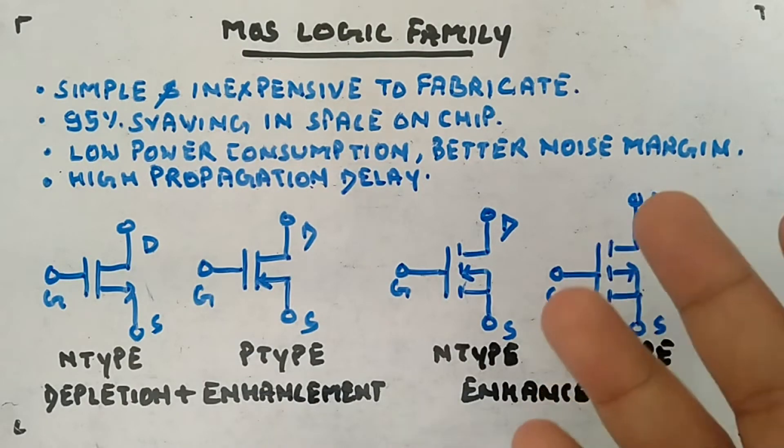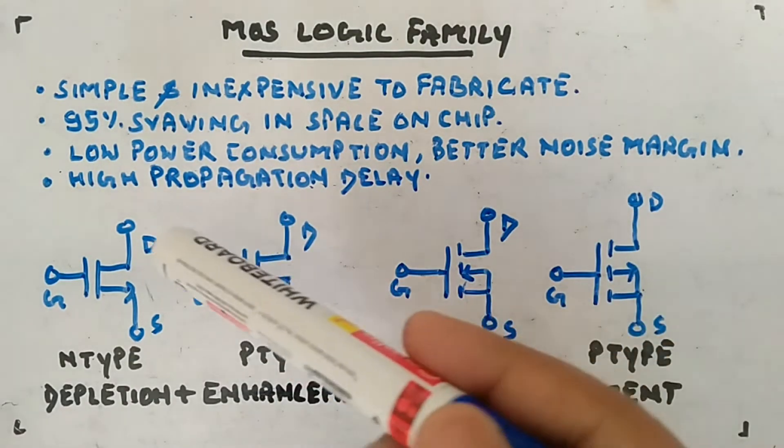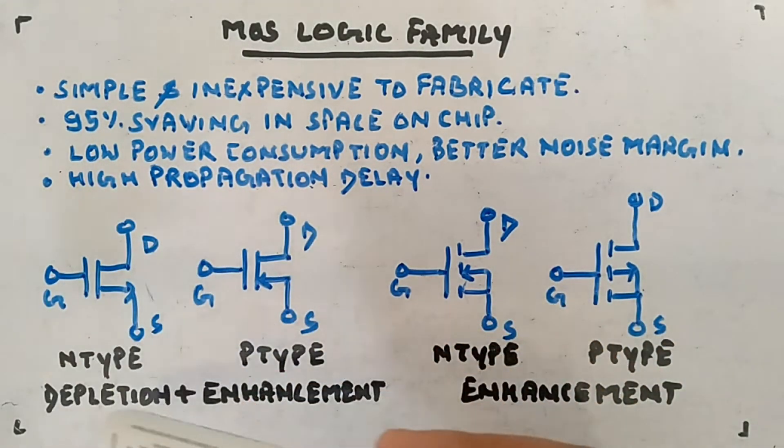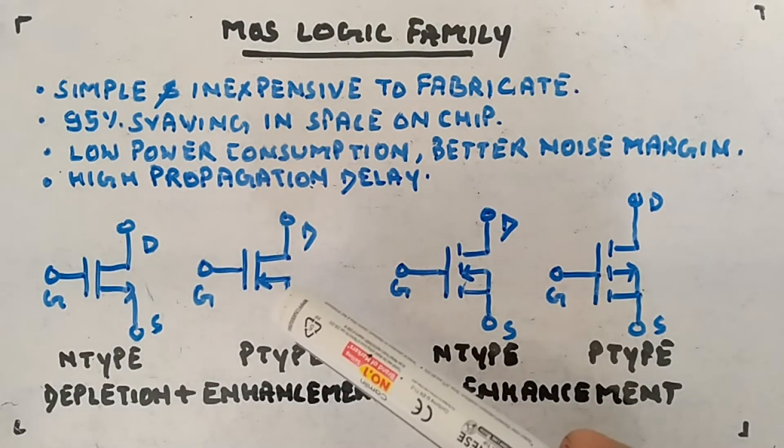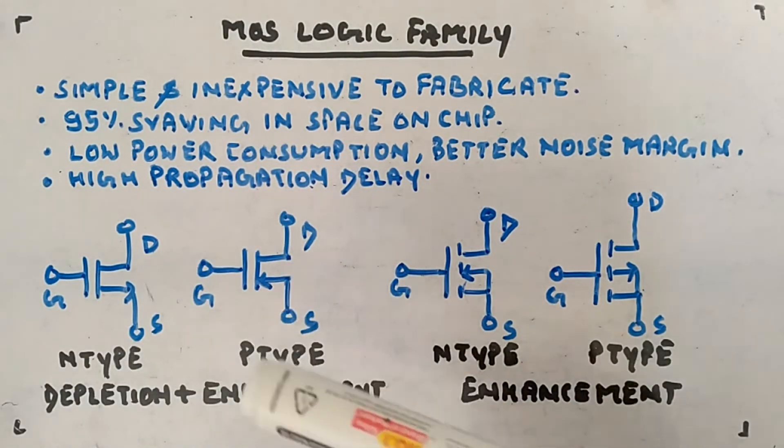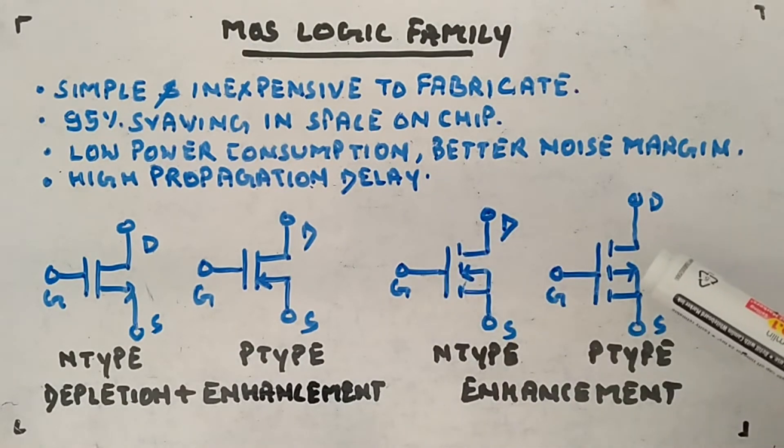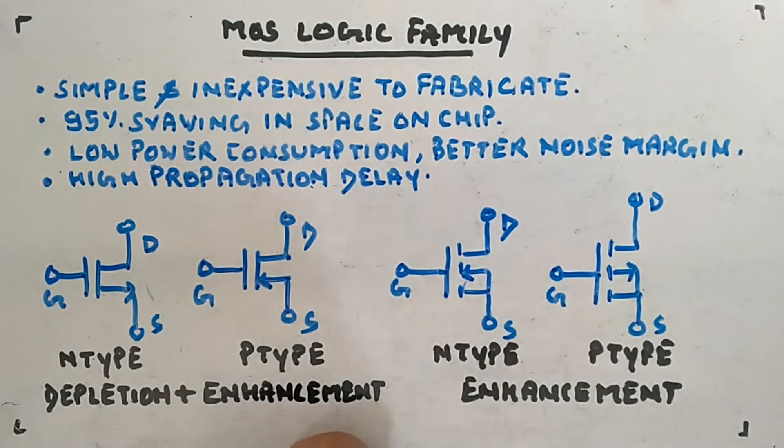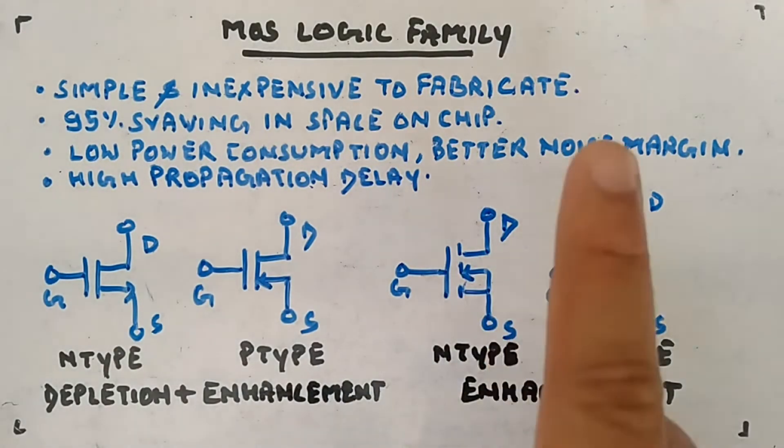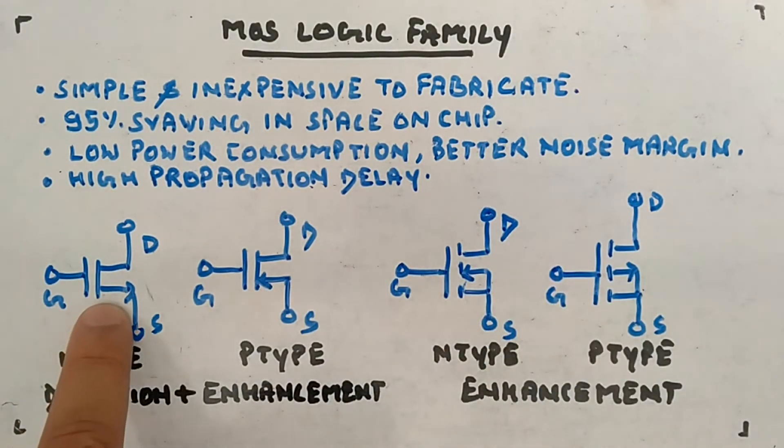So this is the NMOS and PMOS for depletion and enhancement type - this is how they look like. These are symbols I am showing you. Here you can see, this is an enhancement type only. Enhancement and depletion both are these two - this is NMOS, this is PMOS, this is NMOS and PMOS. One difference I want to show you is here the arrow is in source direction for depletion and enhancement N-type.